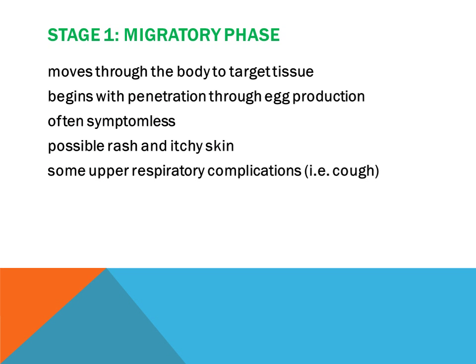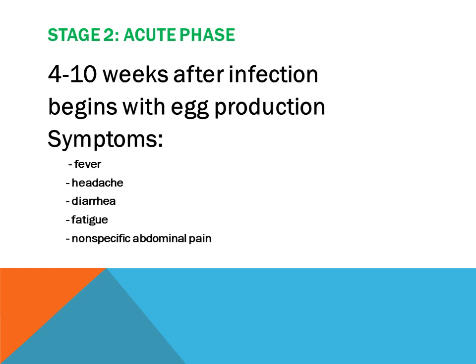Stage 1, the migratory phase: movement of the body to target tissue, begins with penetration through egg production. Often symptomless, with possible rash and itchy skin, some upper respiratory complications and itchy cough.